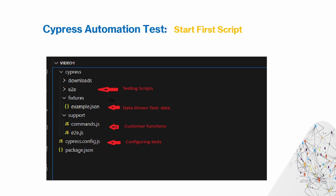In today's video I'm going to show you how you can run your first Cypress automation test. This is a continuation of the previous video, so if you haven't watched the previous video I would suggest you go watch that first. From the previous video, after setting up your Cypress project, this is what the folder structure looks like, and we have several different folders I want to bring to your attention.